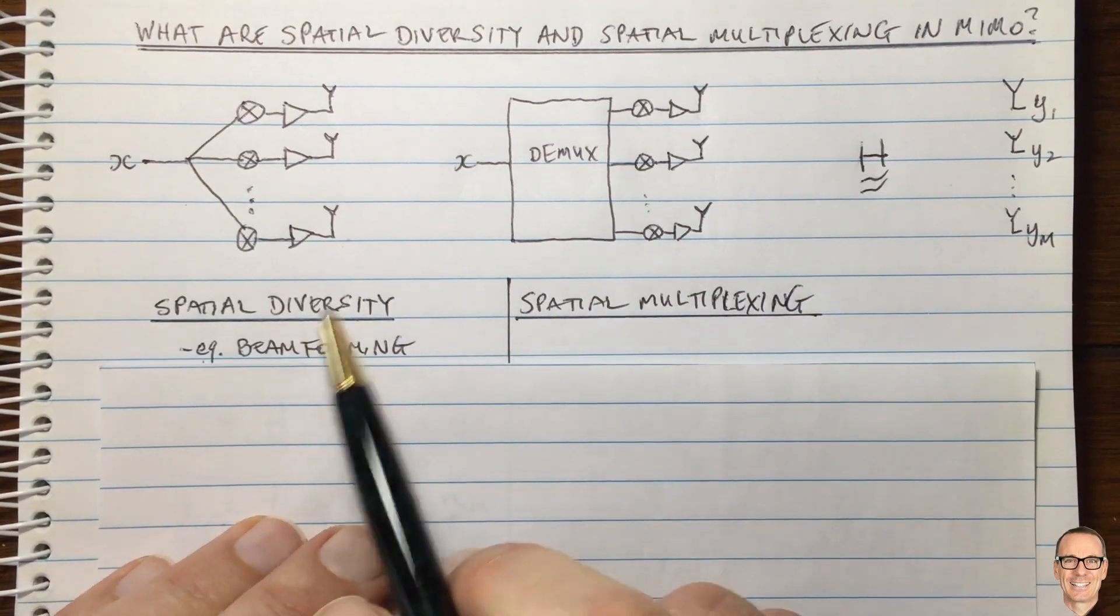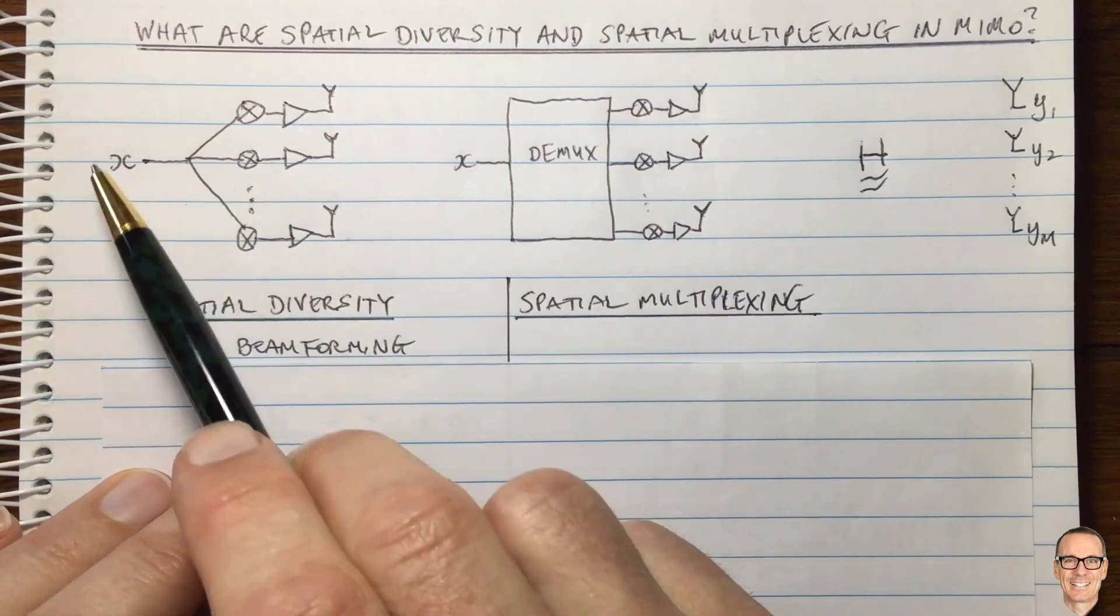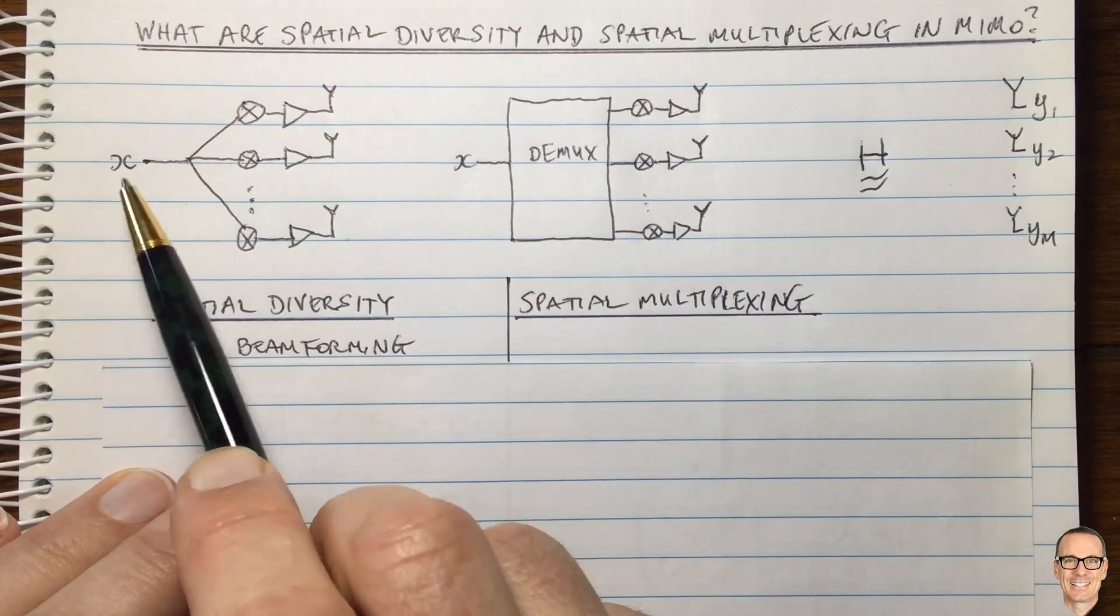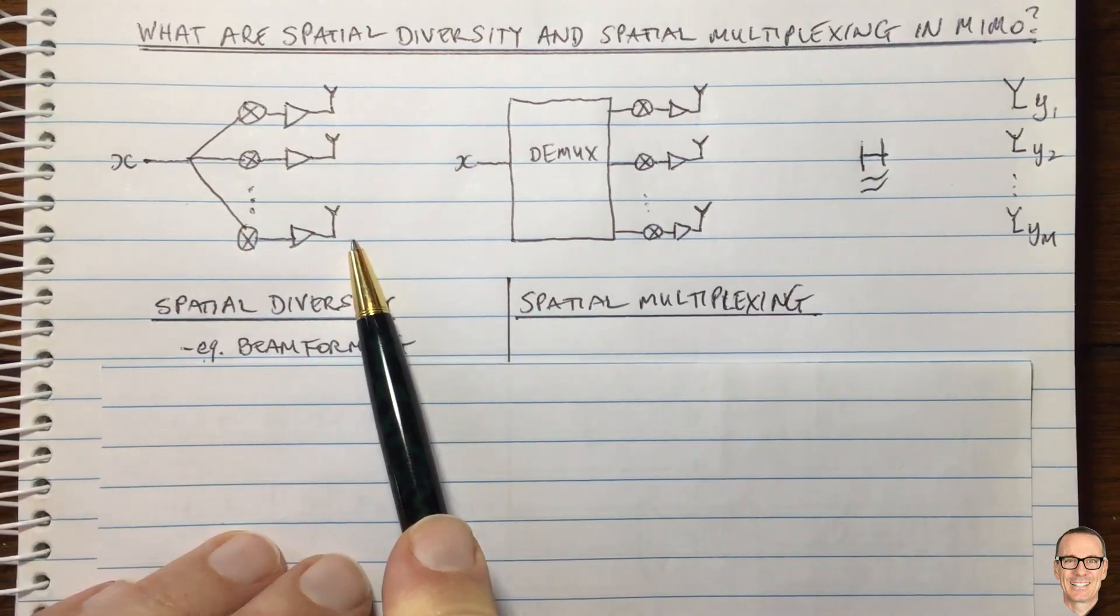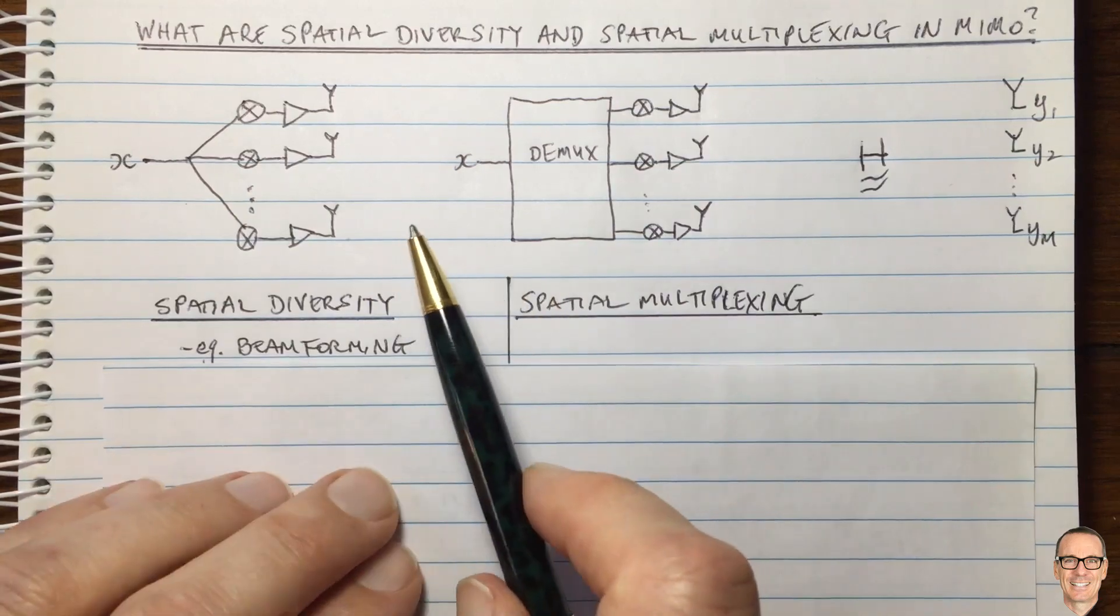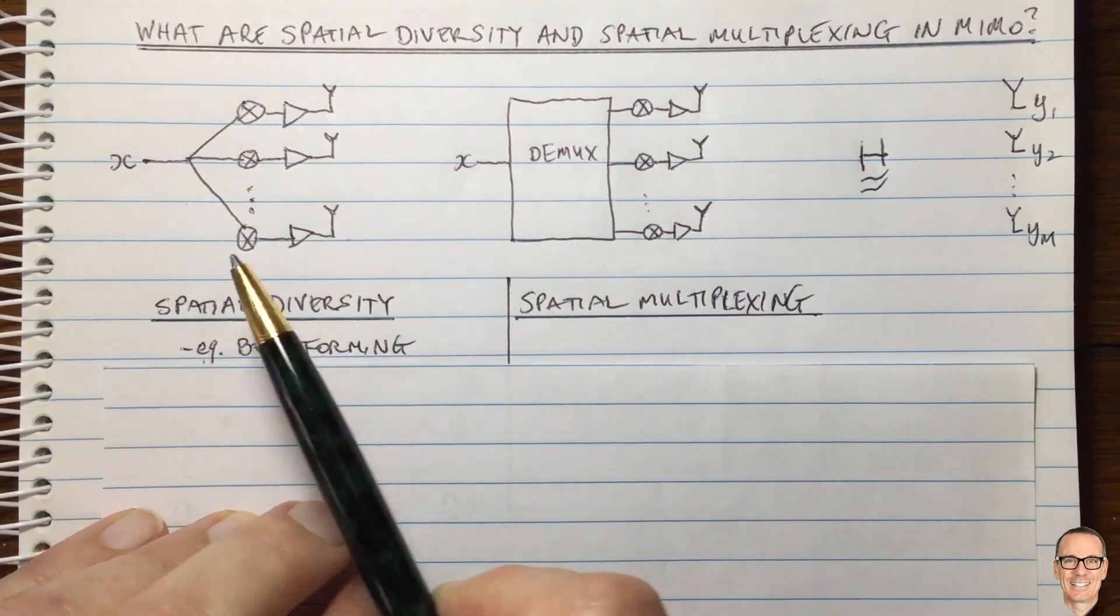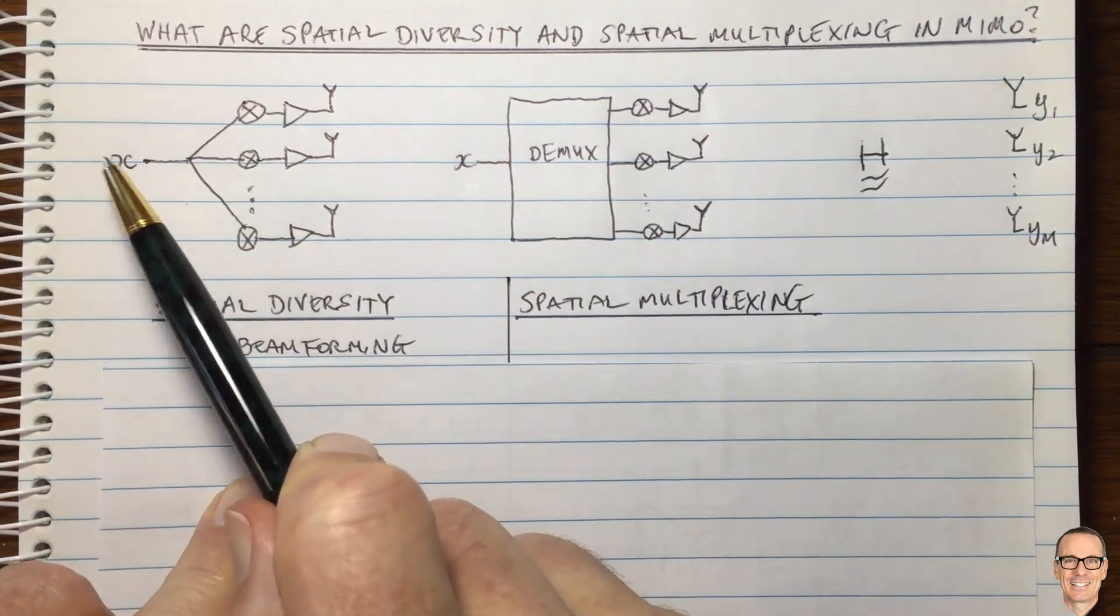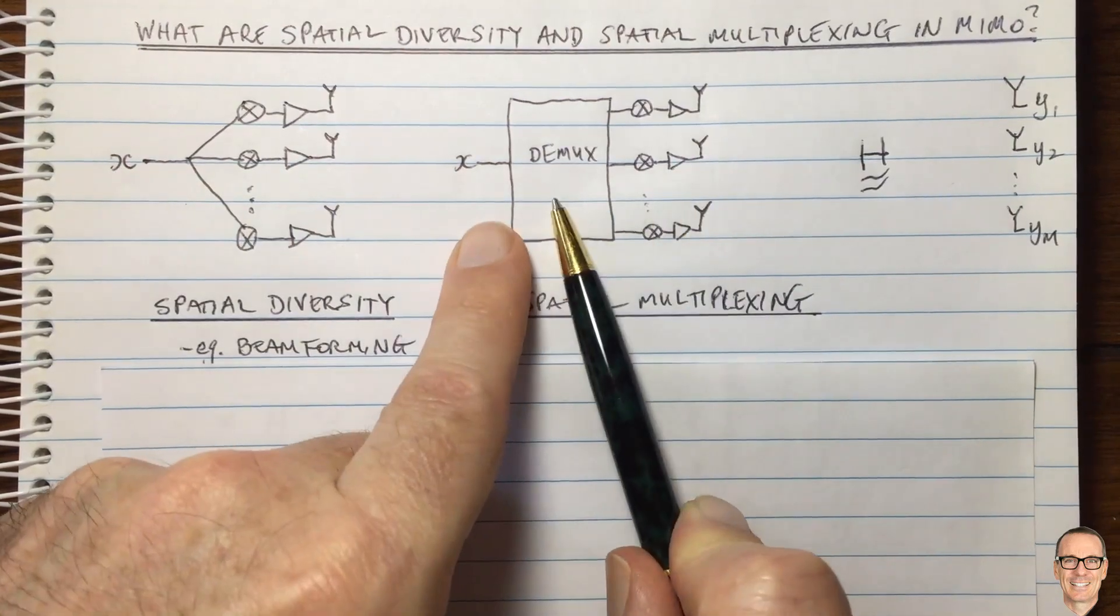Let's start by looking at the spatial diversity situation. In this case, our data stream is a high rate data stream, each symbol needs to be sent, it's going to be sent off all the antennas. And if you had a certain time period over which to send, let's say M symbols, then we can clearly see that in this case, you've got to send them one after another. So you have to send them fast.